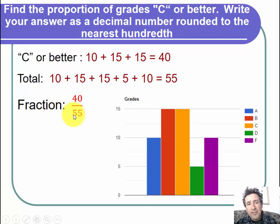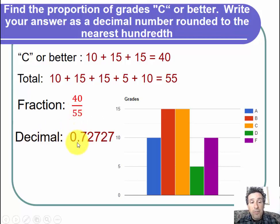We want to write this as a decimal. There's no need to reduce the fraction. We're just going to divide, and I do this in my calculator. And I got 0.72727 and it goes on forever, actually.